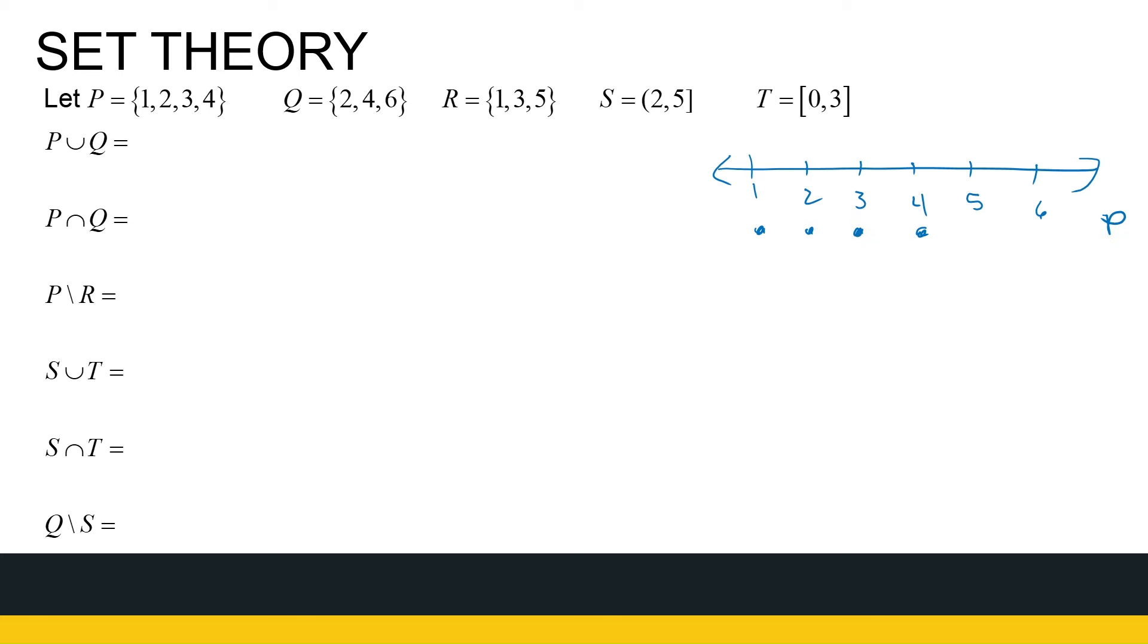Q is two, four, and six. R is one, three, and five. S is everything from two to five, but two is excluded, five is included. And T is everything from zero to three, both included. All right, now I've got a picture of what these sets look like.